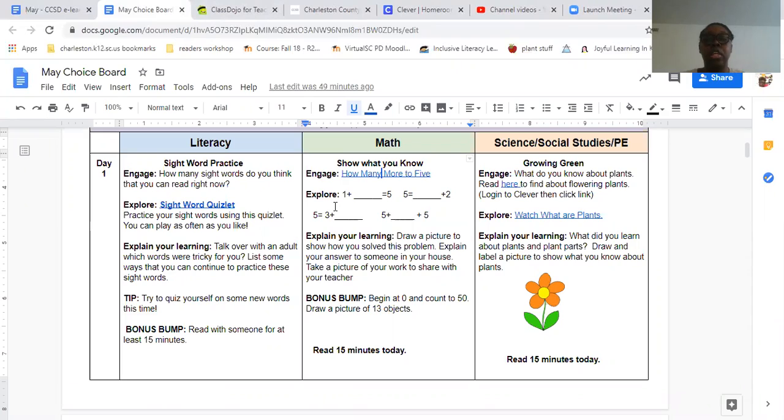And then explore one plus what equals five? Five equals blank plus two. Five equals three plus a number. Five plus a number plus. I think that's supposed to be equals five. So that's a little typo right there. Let's see if I can fix that. Here we go. Equals five.